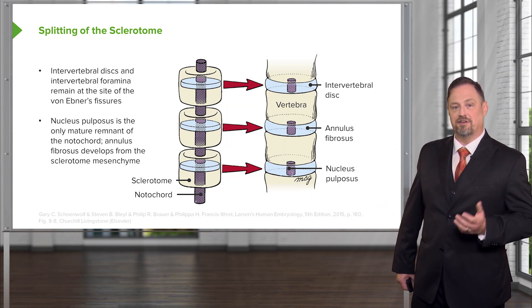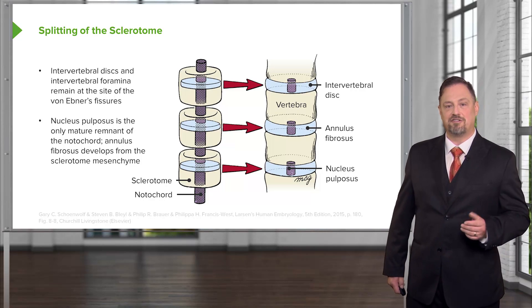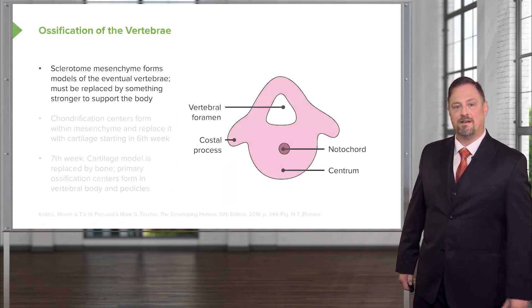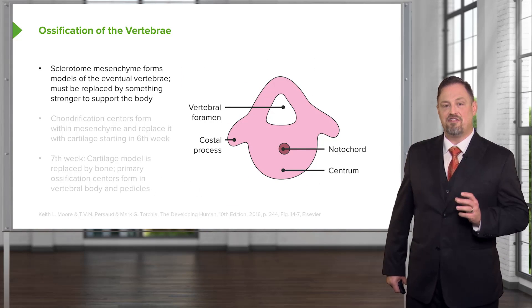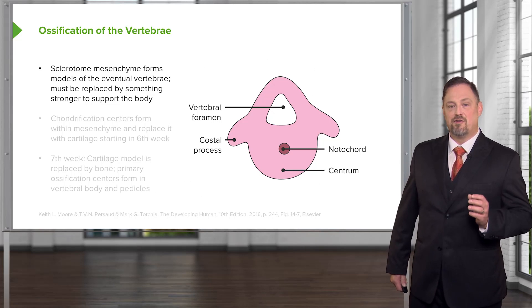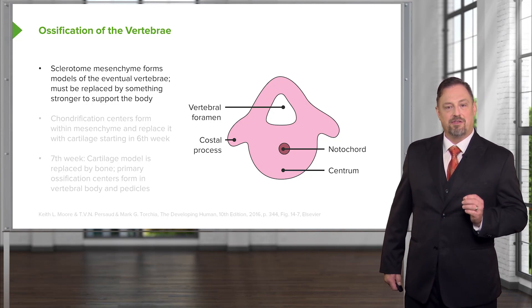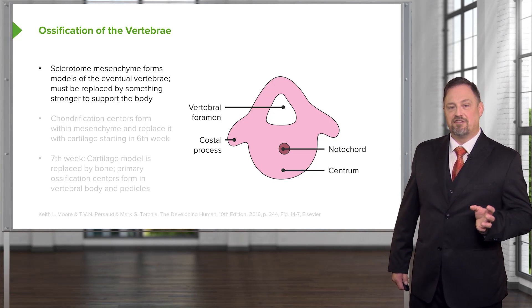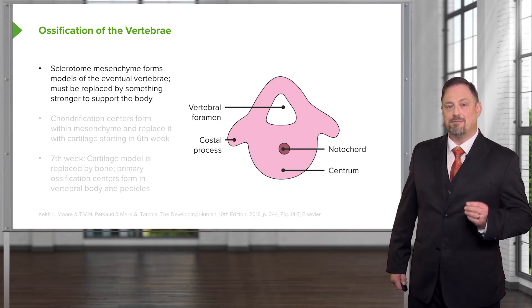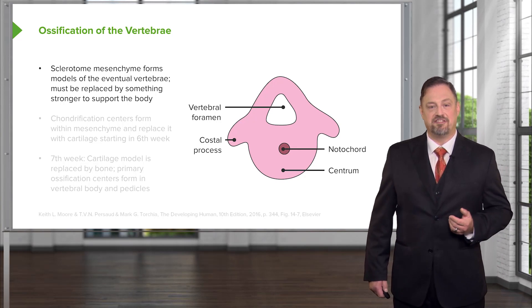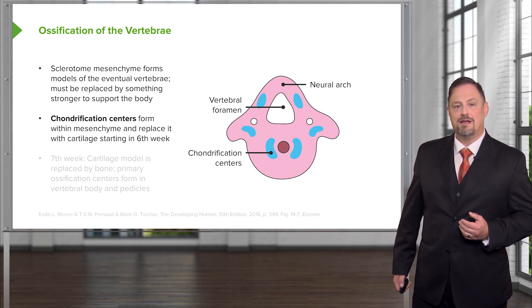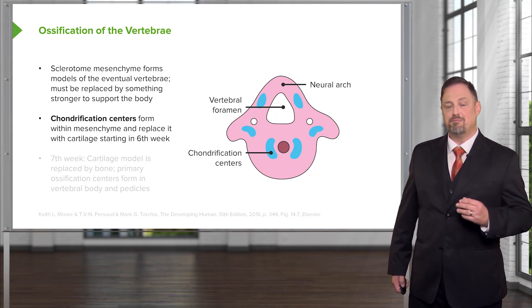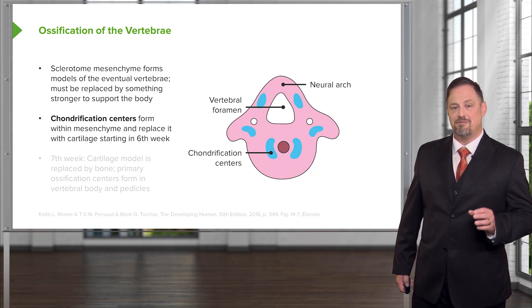The outermost layer of the intervertebral disc is called the annulus fibrosus, and it also comes from the sclerotome. We now have a loose model made of mesenchyme — undifferentiated cells — of each vertebra surrounding the spinal cord with the notochord at its center. This grouping of cells needs to be tougher for the body to have support as it develops, and for that we get chondrification centers forming inside this model. These chondrification centers will create cartilage, which is more substantial than mesenchyme but not quite as strong as bone.